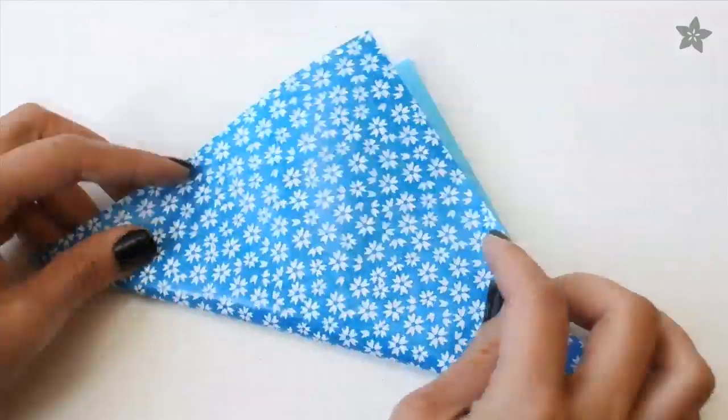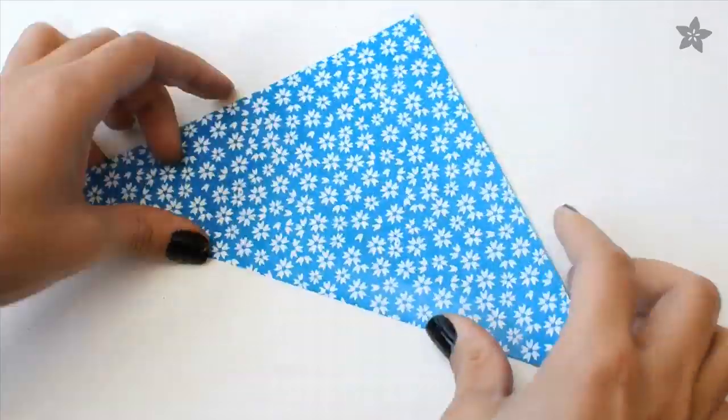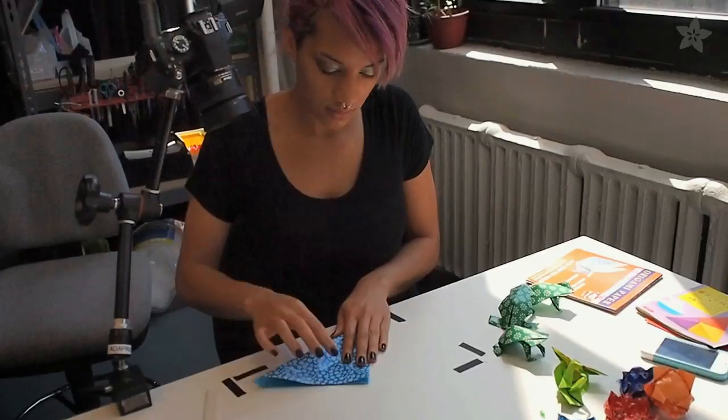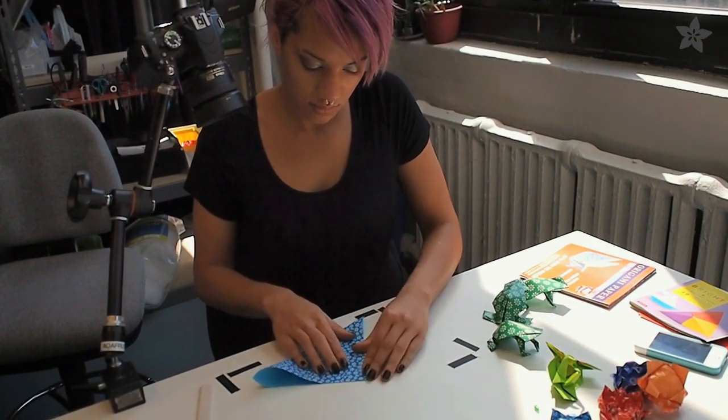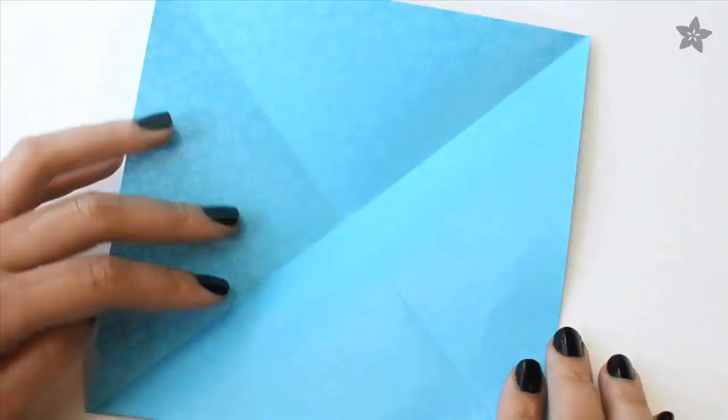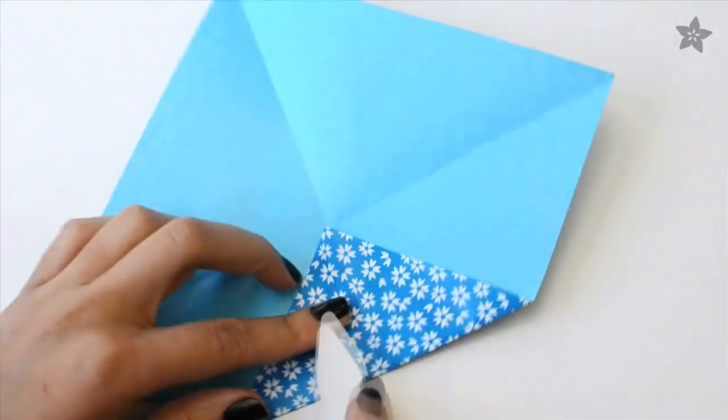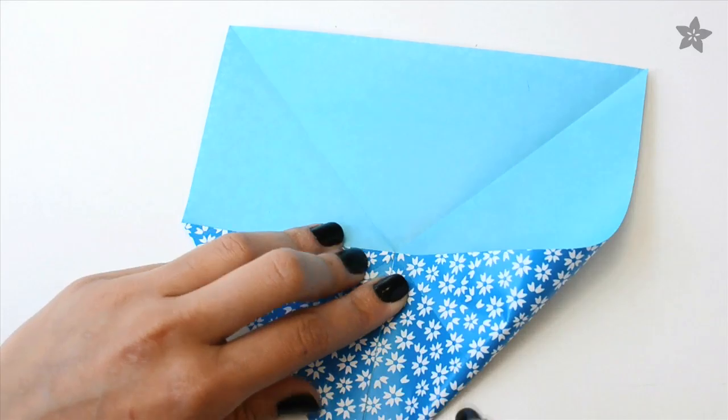To make the lotus flower, start with a square of origami paper and fold it in half diagonally to make a triangle. Then unfold and repeat in the other direction. When you open it back up, you should have creases in the shape of the letter X. This X reveals the center point of the paper.